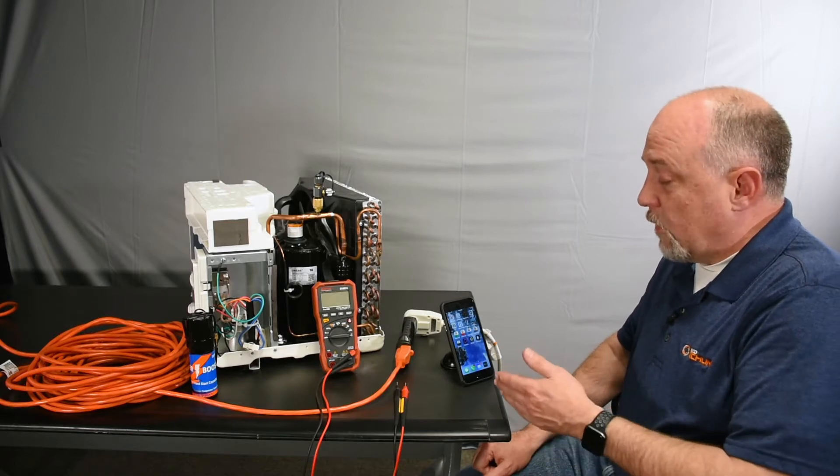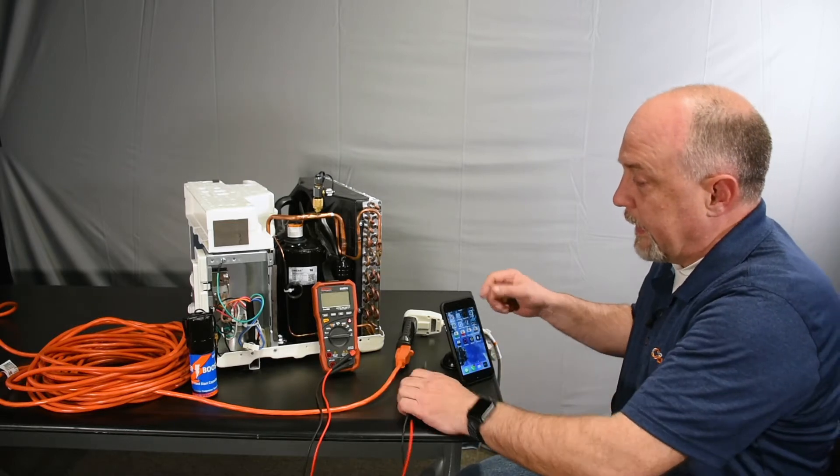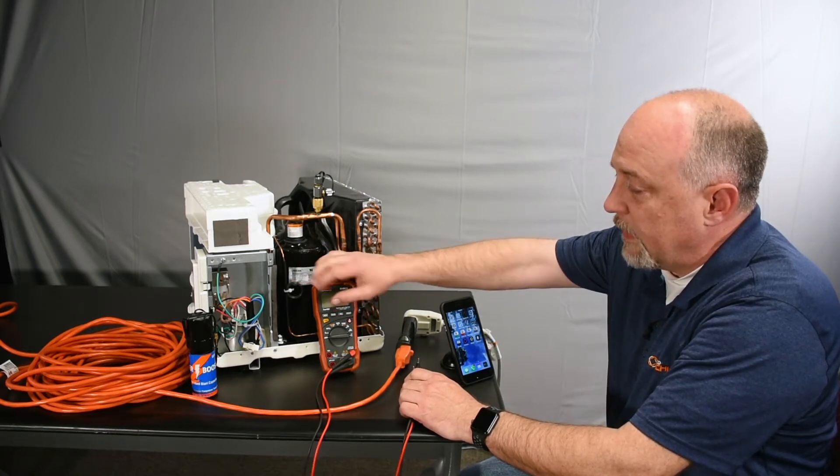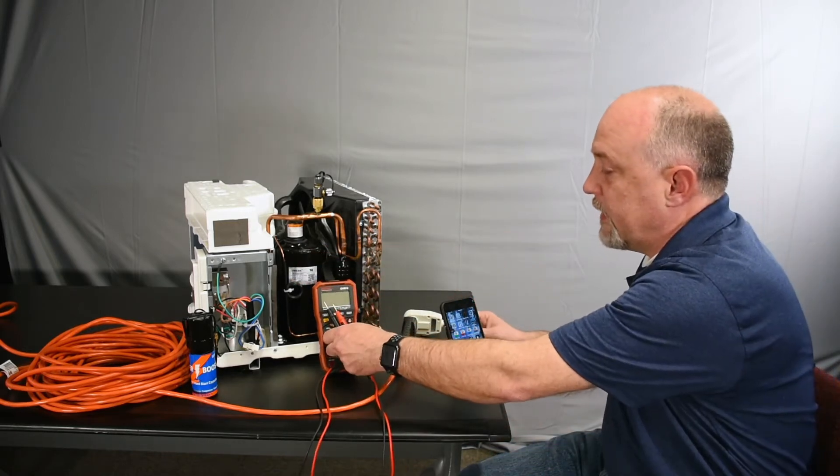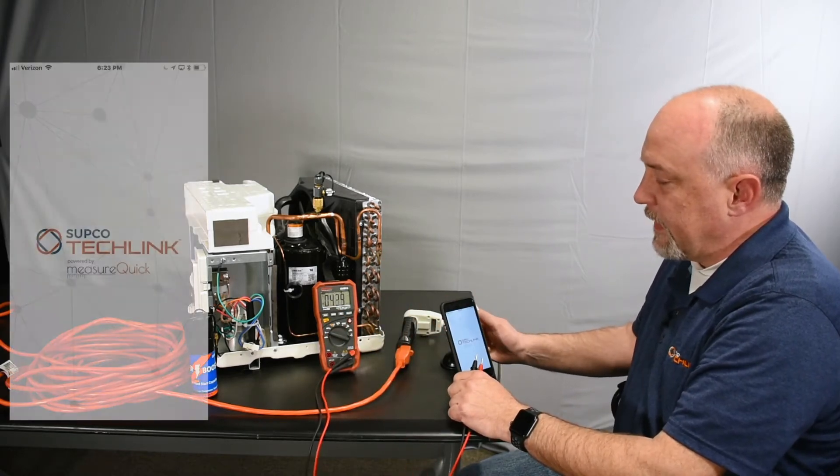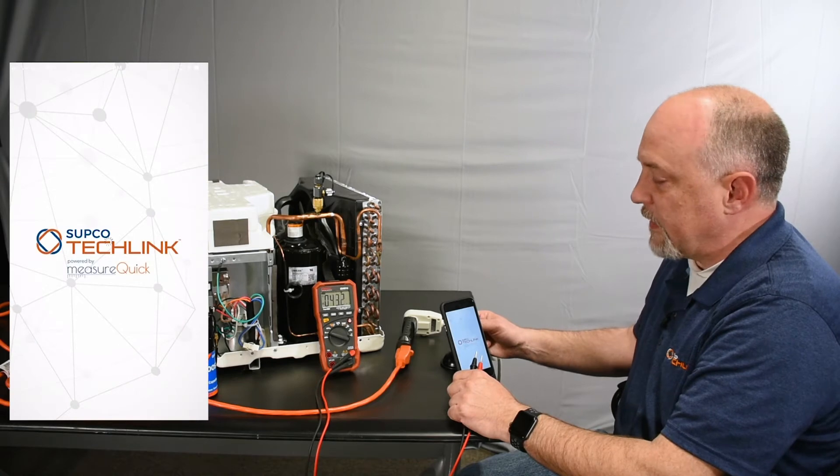In this case, what I've got set up is a window air conditioner with a capillary tube. This is very typical to a residential type unit where they have either capillary tube or fixed orifice. The interesting thing with this type of unit is it takes a few seconds to equalize.